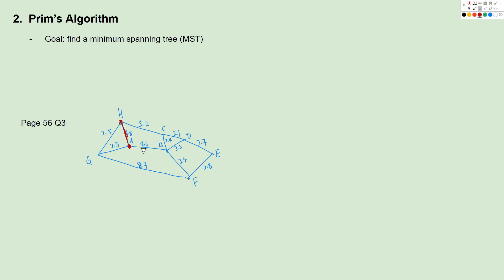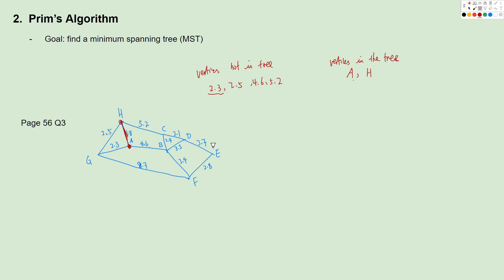Now we have two vertices in the tree: A and H. We look at the edges which connect vertices not in the tree with A or H. For A, we have 2.3 and 4.6. For H, we have 2.5 and 5.2. Listing them: 2.3, 2.5, 4.6, 5.2. We choose the least weight, which is 2.3, meaning we connect G with A.